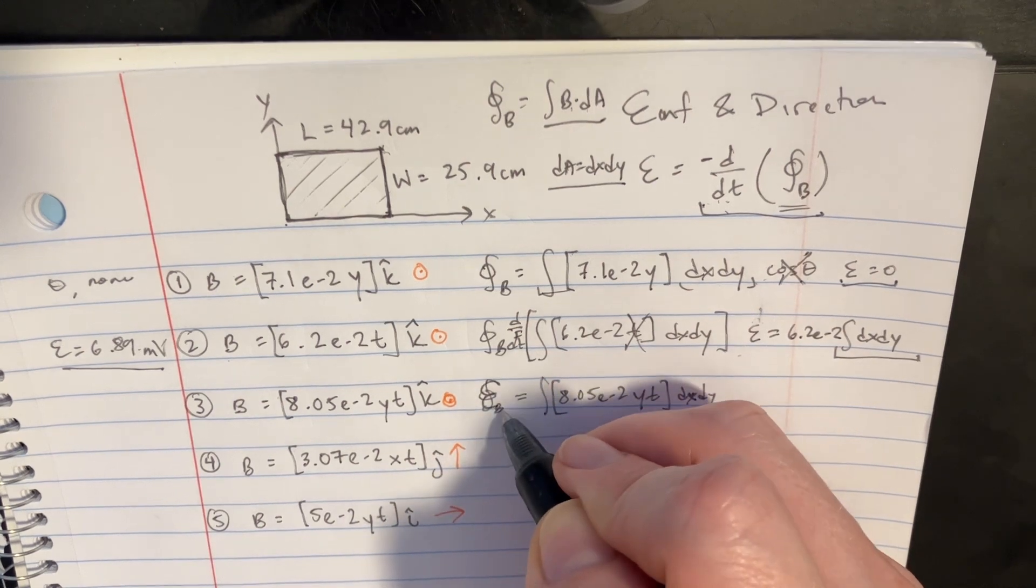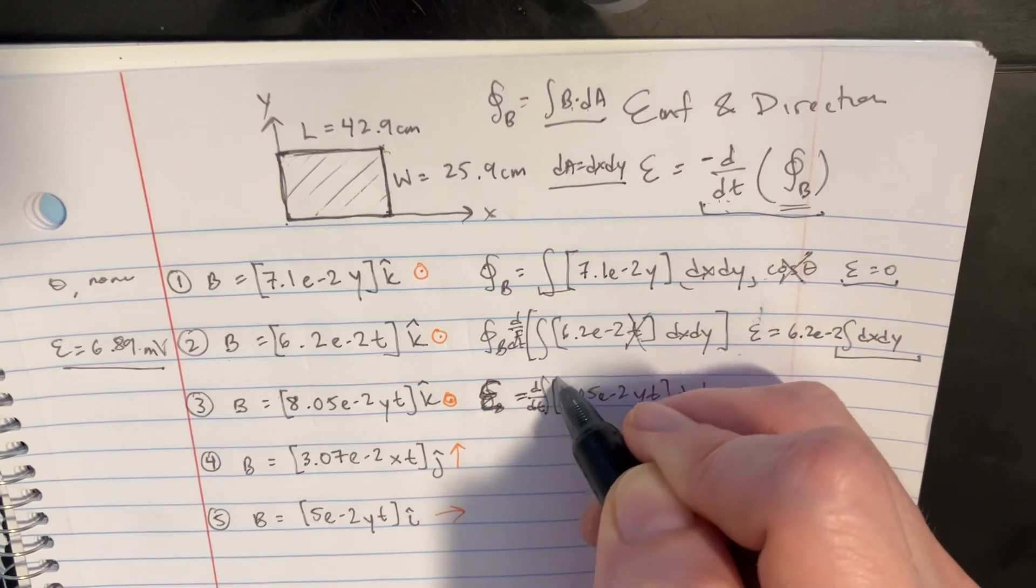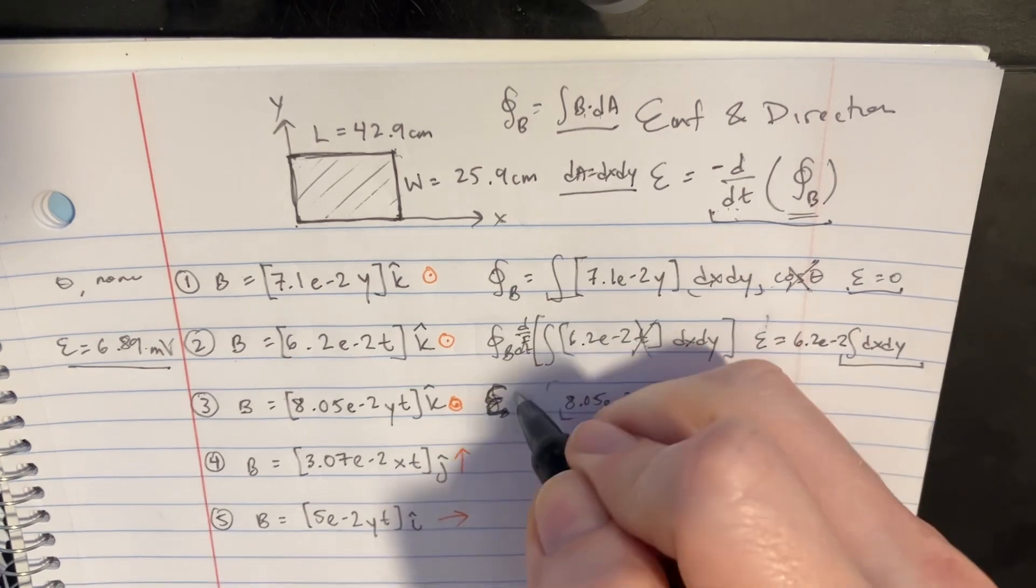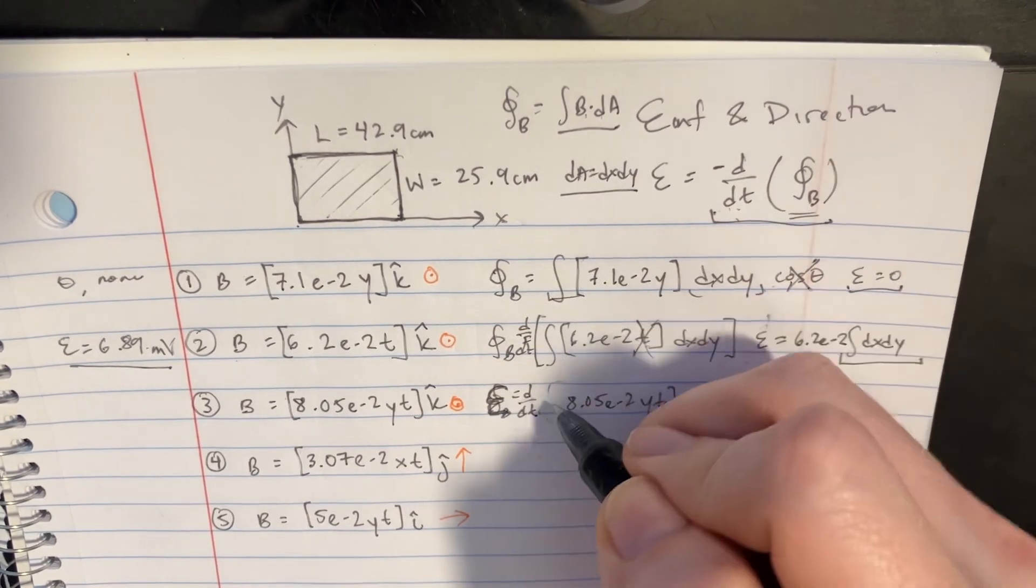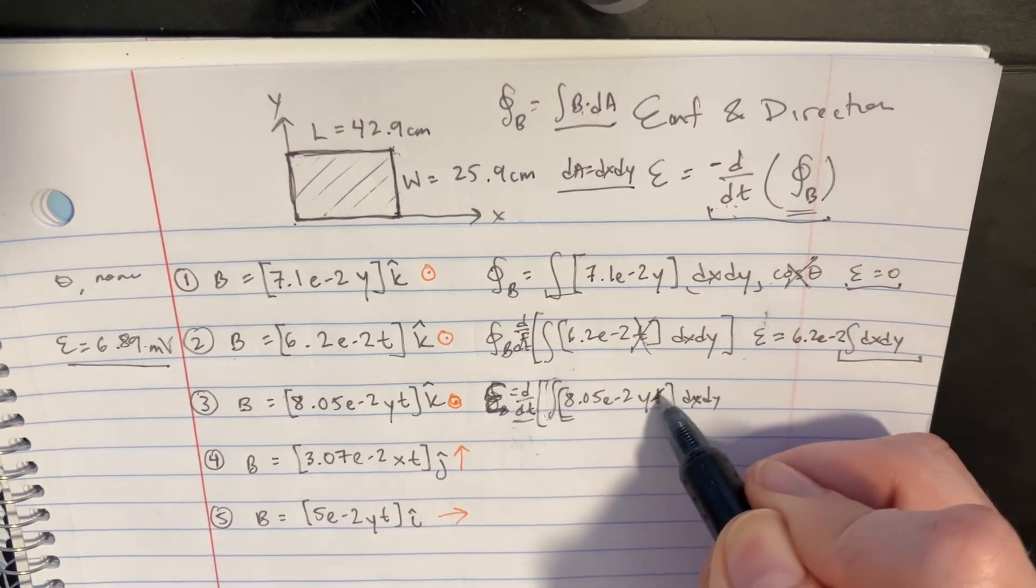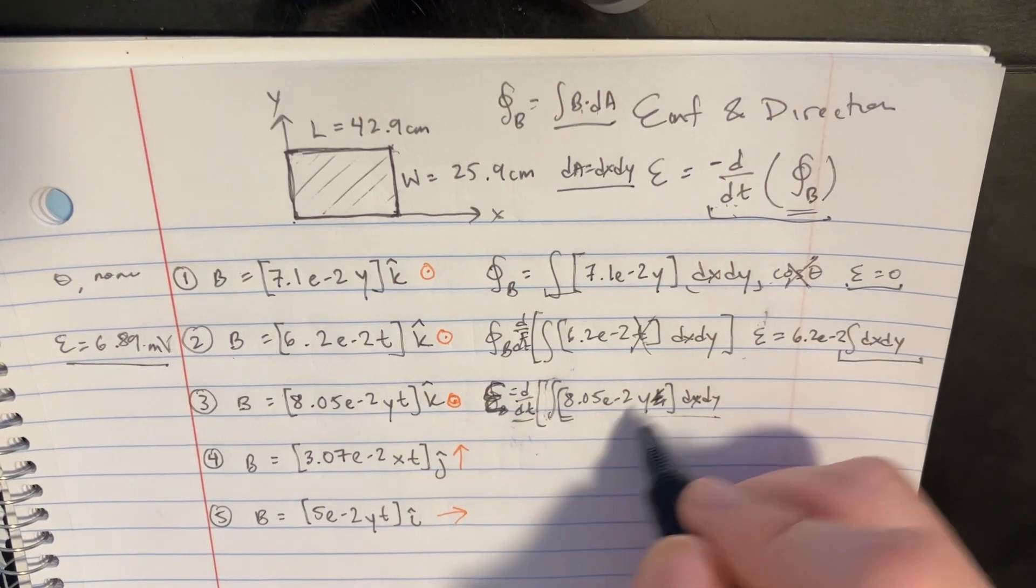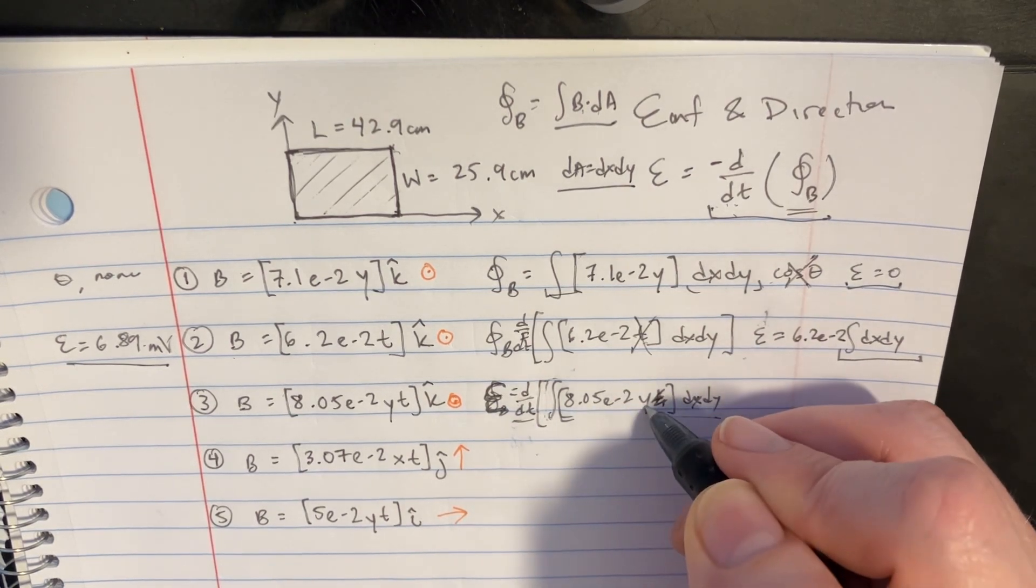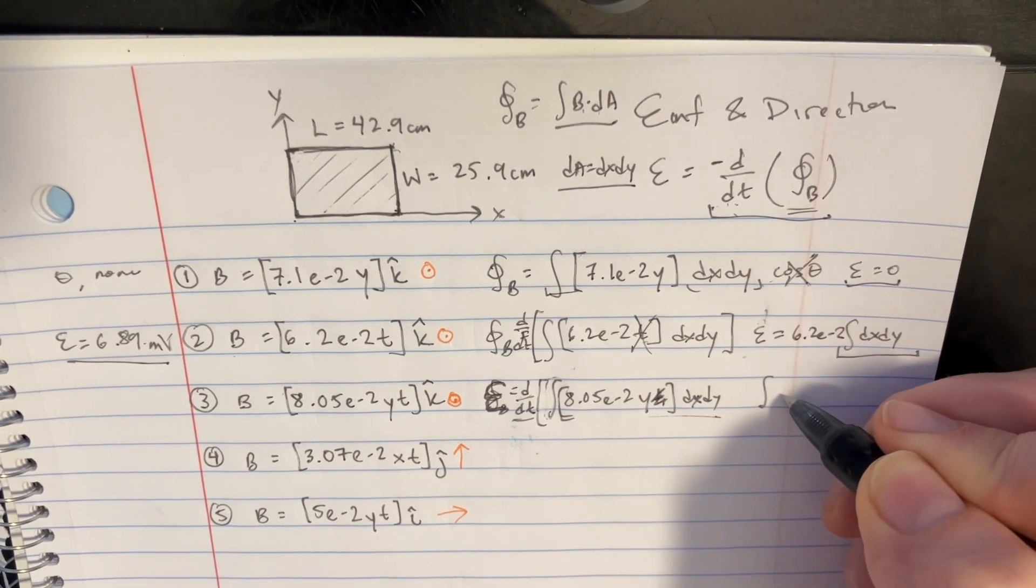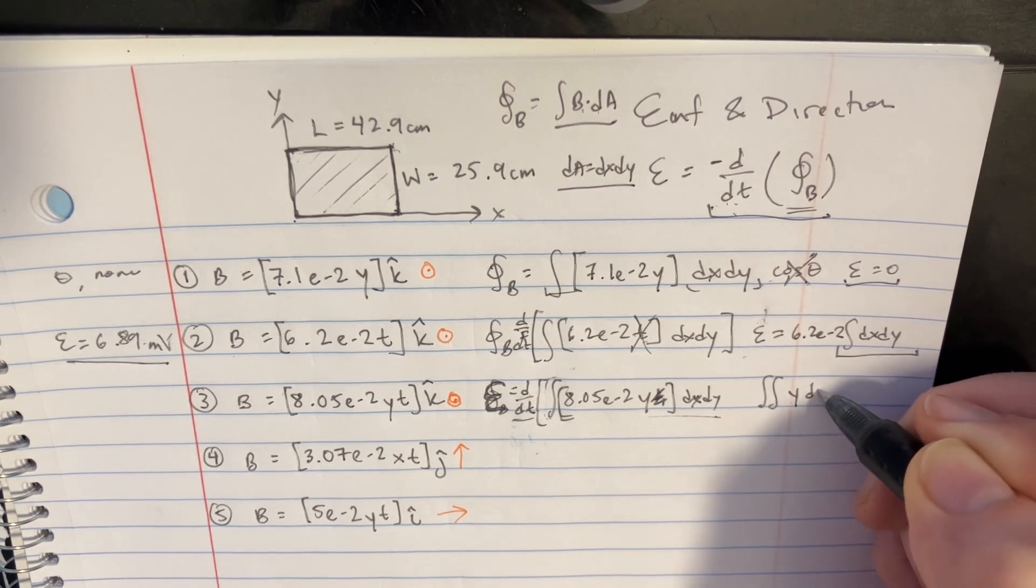We can switch this to the E, right? E equals the derivative of what we had here. Let's transform the plan. So get the derivative of this integral. Because it's a time derivative, we'll just basically drop that t, and we're left with this integral here. If we integrate, if we were to integrate like a double integral here of y and then dy dx.